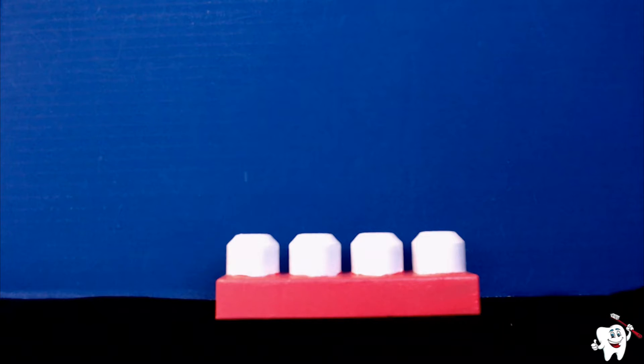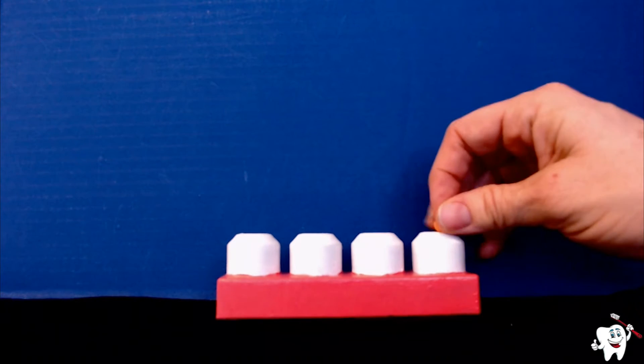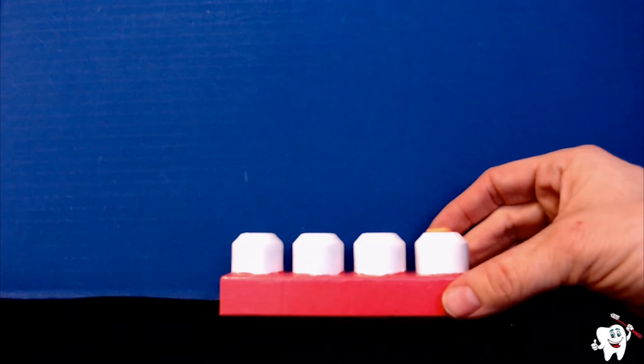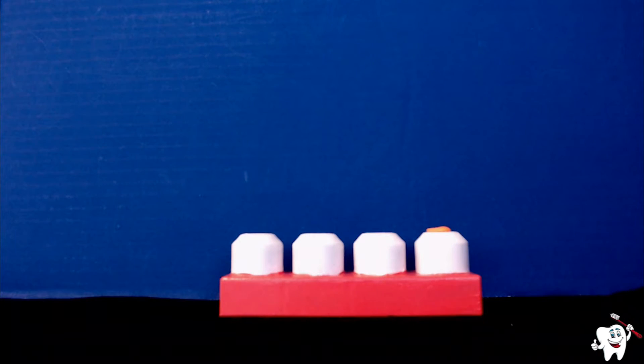This presentation shows the importance of brushing and flossing our teeth. This mega block represents our teeth and gums. I have bits of play-doh. Orange play-doh will represent the germs that stick to our teeth. These germs can be called bacteria.